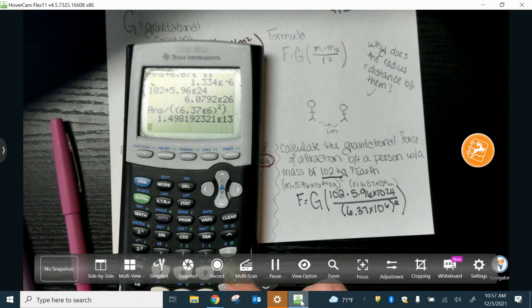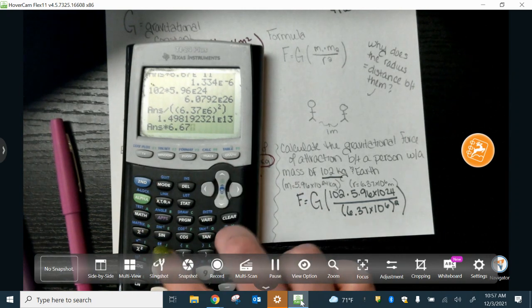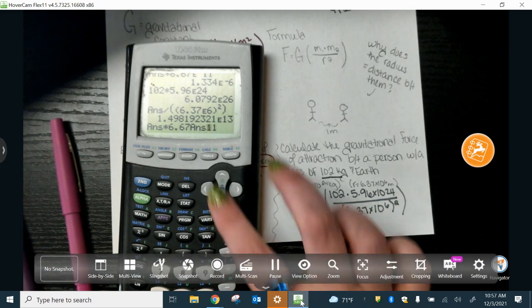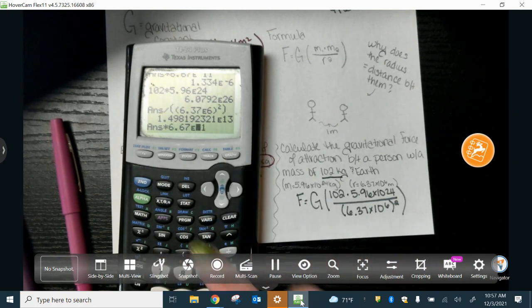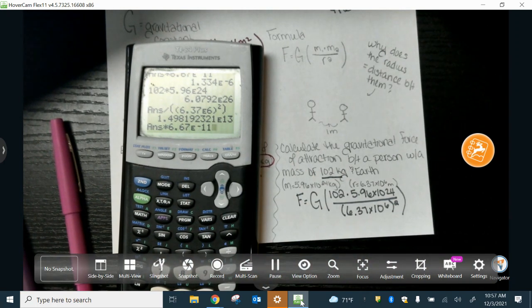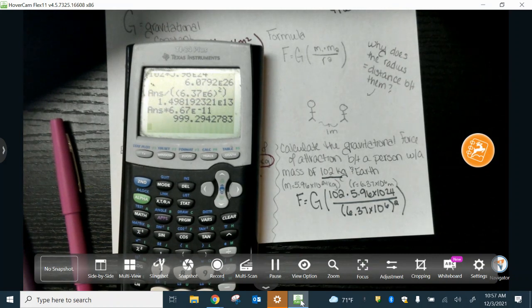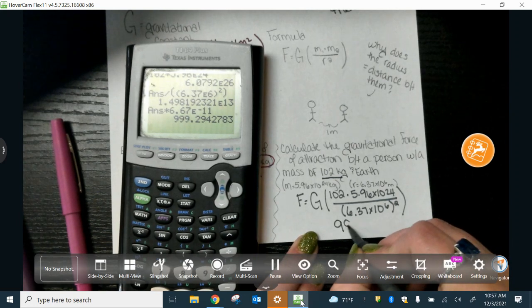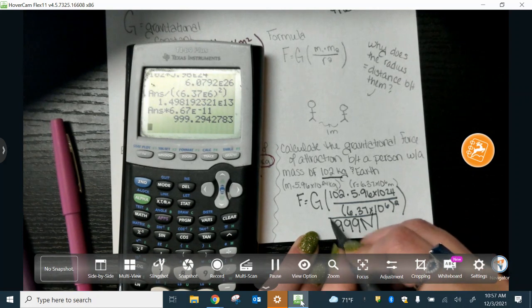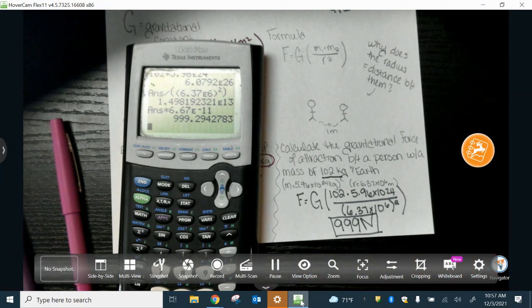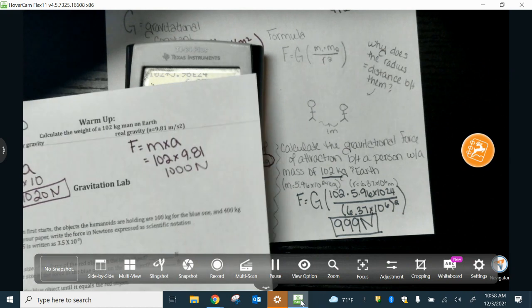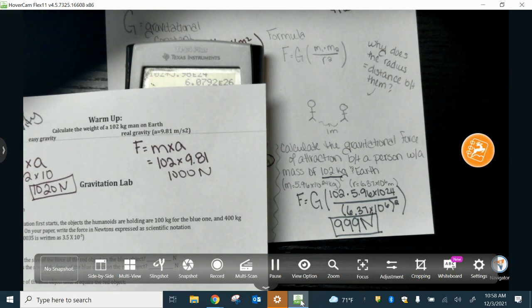I am still not done. Now I've got to multiply it by that gravitational constant. Times 6.67 times 10 to the negative... Oops. Hold on. Second comma. So, negative 11. Yeah. 999 newtons.